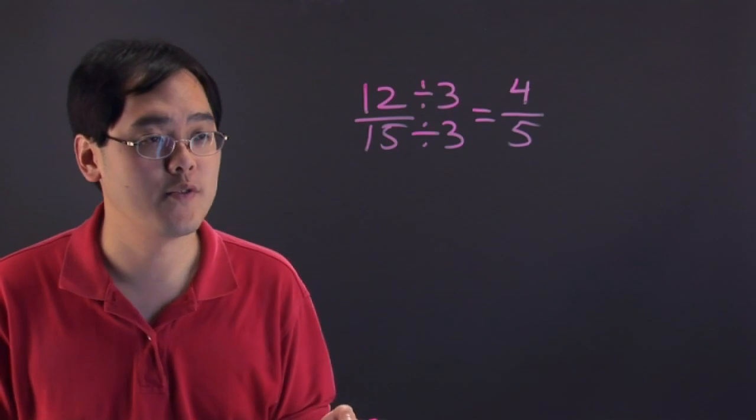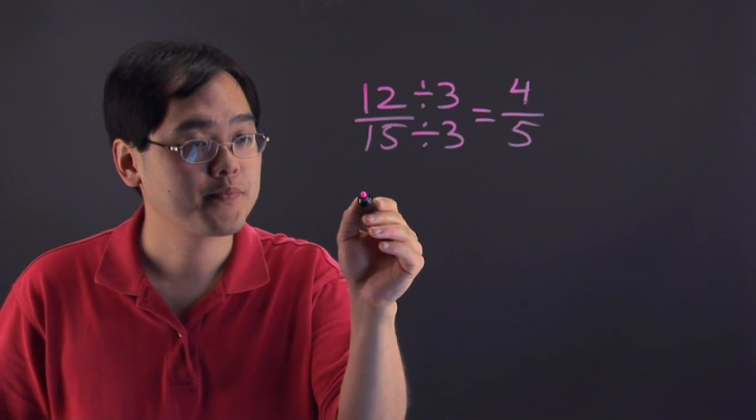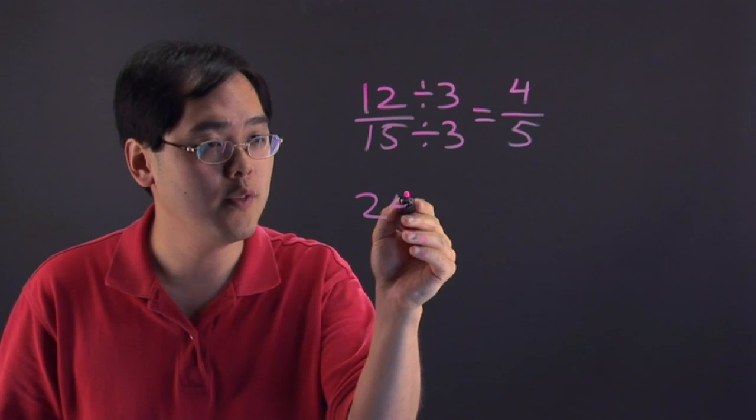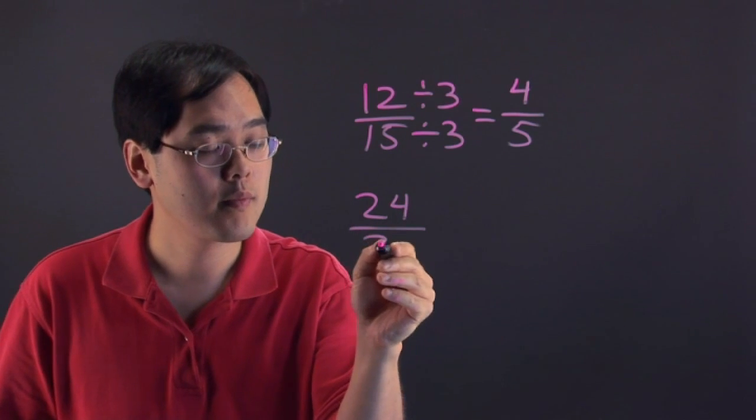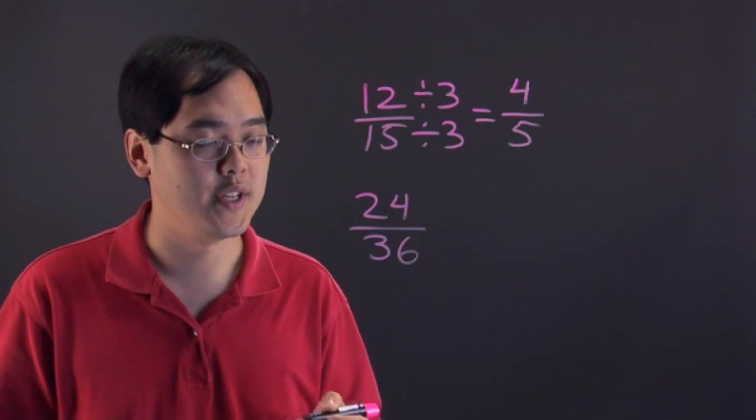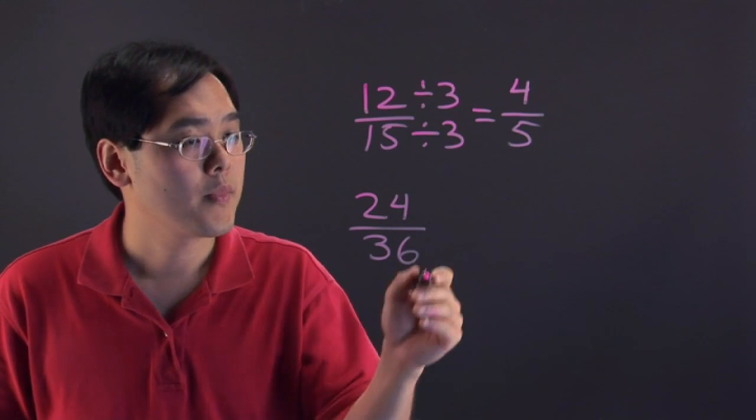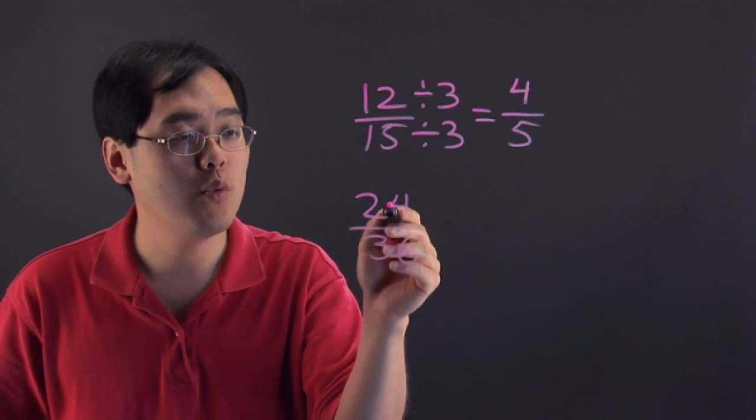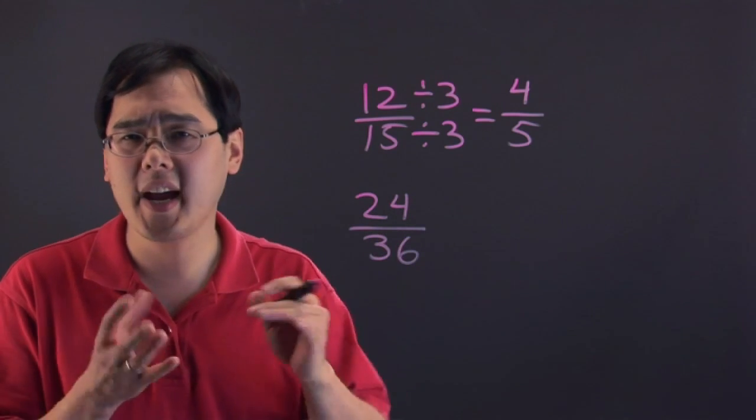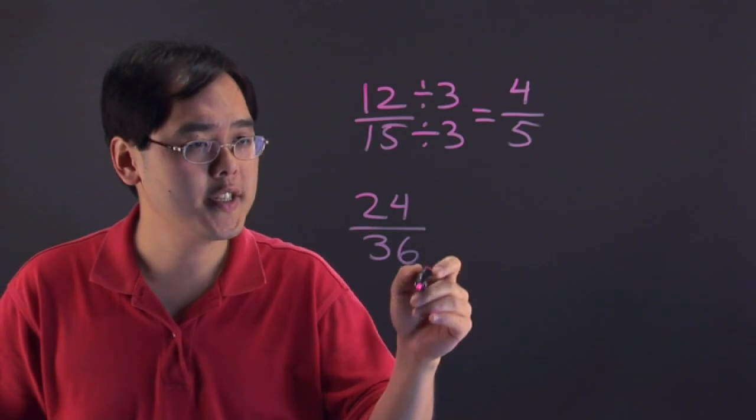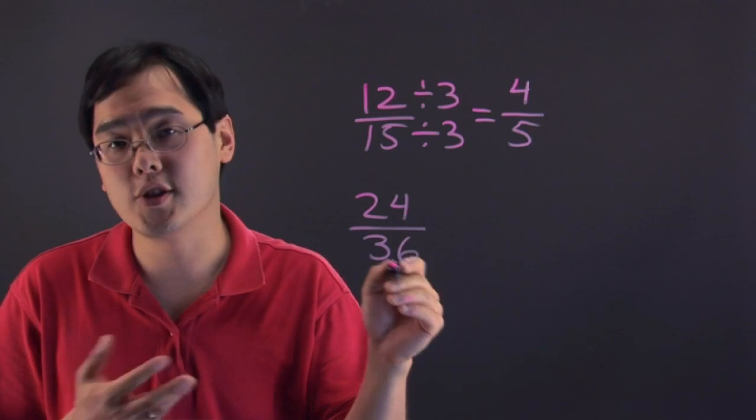Now, here's another illustration for you. Suppose you have 24 over 36. Now, one easy way to do this would be to think of a number that will go into both 24 and 36. They're kind of medium sized numbers, but if you divide both sides by 2, for example,